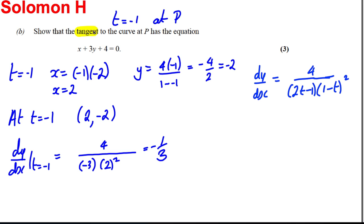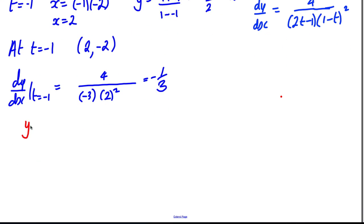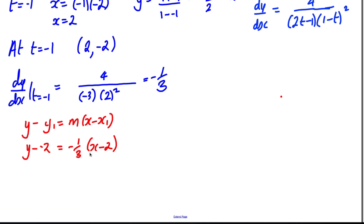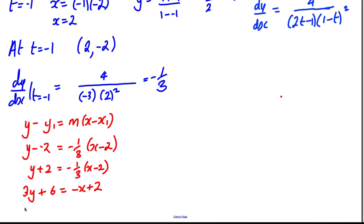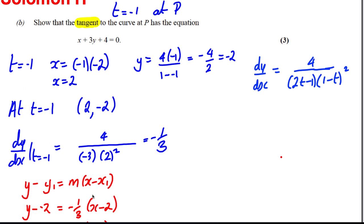Now we have everything needed for the tangent. Using y minus y1 equals m(x minus x1): y subtract negative 2 equals negative one third times (x subtract 2). Multiplying everything by 3 gives 3y plus 6 equals negative x plus 2. Adding x to both sides and rearranging gives x plus 3y plus 4 equals 0, which is exactly what the question requires.